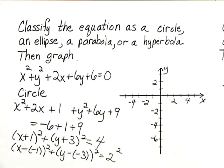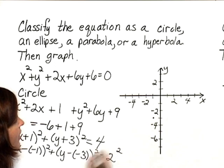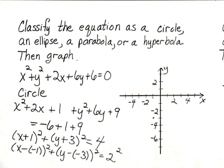Now we'll go ahead and mark the center on the graph, negative 1, negative 3, but it's not technically part of the graph of the circle. The circle is the graph of all the points that are 2 units away from that center.